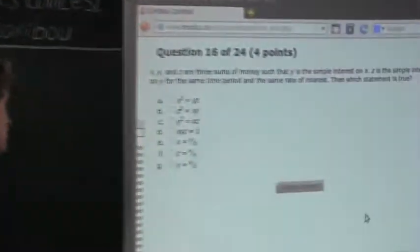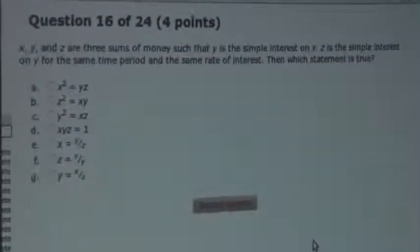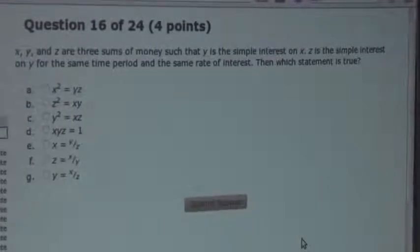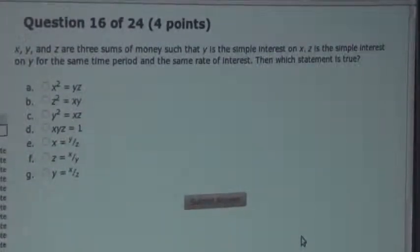So the question is: X, Y, and Z are three sums of money such that Y is a simple interest on X, Z is a simple interest on Y for the same time period and the same rate of interest. Then, which statement is true?